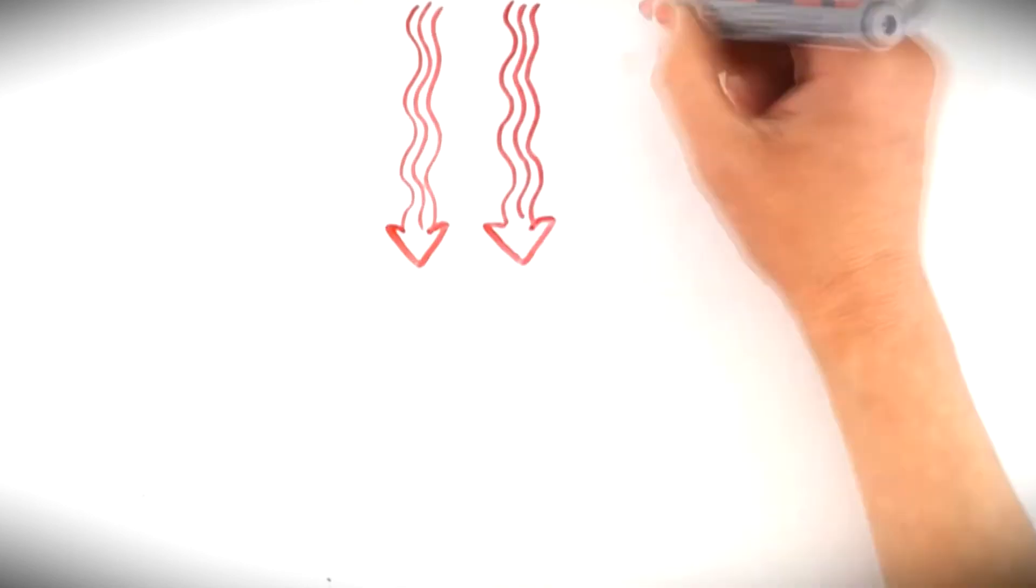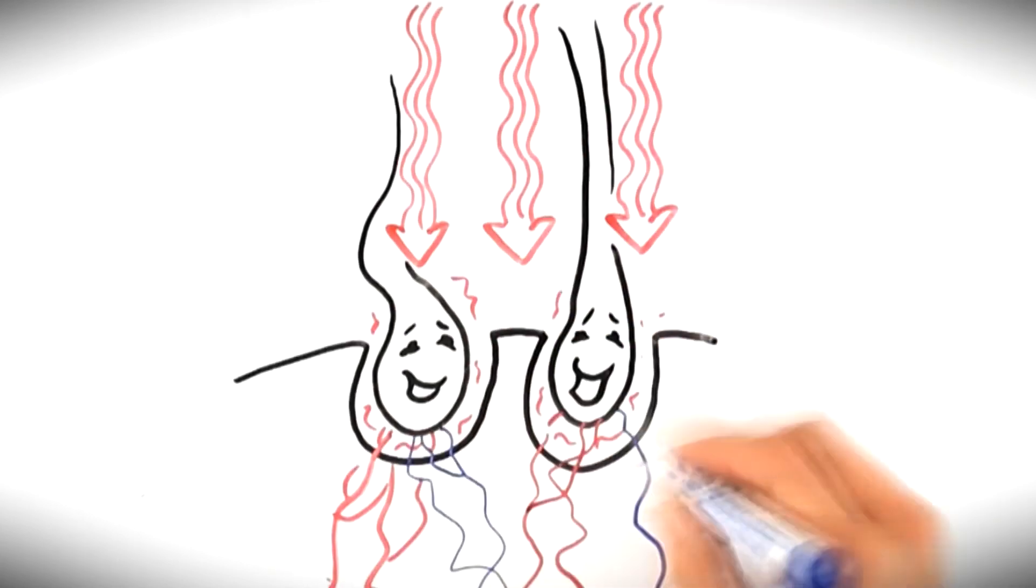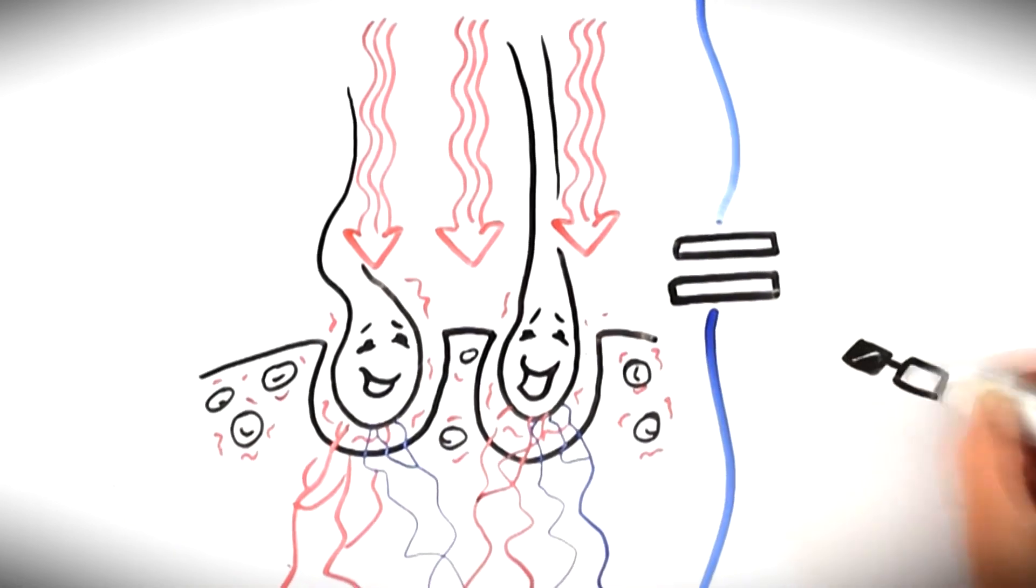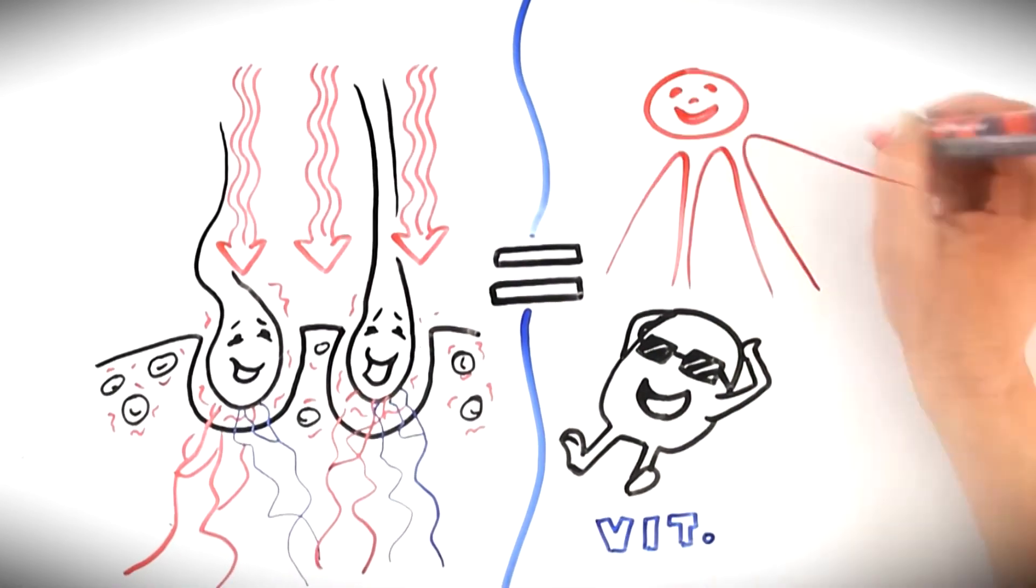Low laser light therapy stimulates cell activity through photochemistry. Just like vitamin D, the sunshine vitamin, is created through adequate sun exposure.